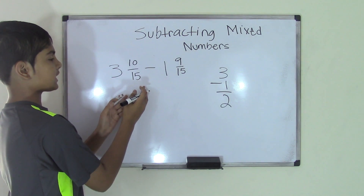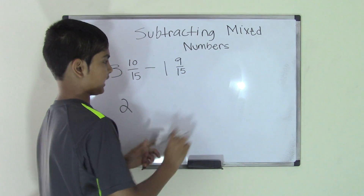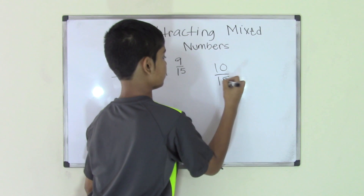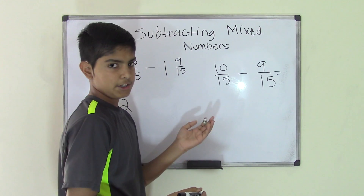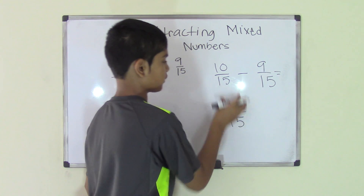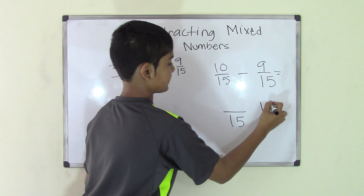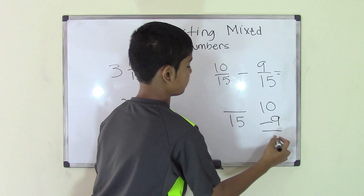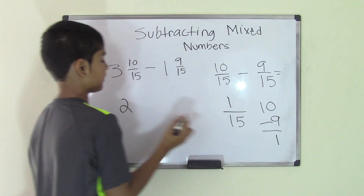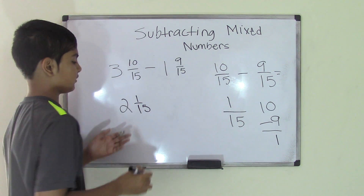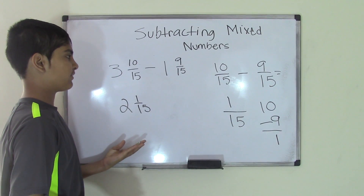Now for the fractions: 10/15 minus 9/15. Remember that we don't subtract the denominators — we simply bring them down, so 15 stays. The only thing we have to do is subtract the numerators: 10 minus 9 is 1. So we bring the 1 over and we have our new fraction 1/15. Our final answer is the mixed number 2 and 1/15.